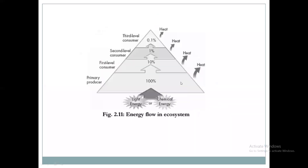This is seen in the energy flow in the ecosystem, shown in pyramid form. 100% energy is absorbed by the primary producer plant from solar energy — sunlight. The plant utilizes 90% energy and 10% energy is transmitted to first-level consumers. They utilize 90% energy and 10% energy is transmitted to second-level consumers. Second-level consumers utilize 90% energy and transmit 10% — that is 0.1% — to third-level consumers. During this process, energy is transferred in the form of heat.